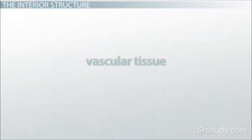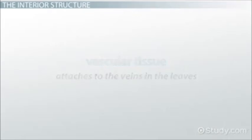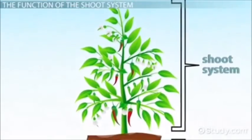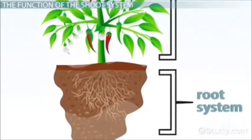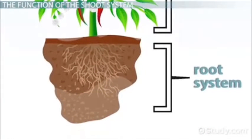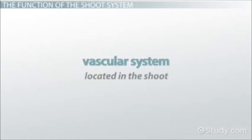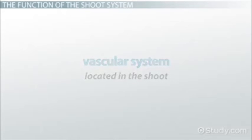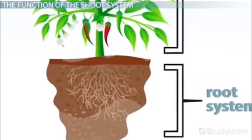Finally, the vascular tissue attaches to the veins in the leaves and is responsible for getting nutrients around the plant. The shoot system works closely with the root system of the plant. The shoots are able to absorb nutrients via the plant's different roots, and the water and other nutrients that are taken in are shuttled up through the plant's vascular system located in the shoot. It moves up through the shoot to the leaves of the plant, distributing out across the leaf veins to the different sites where the nutrients are needed.